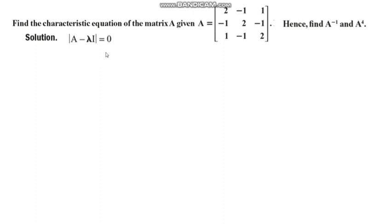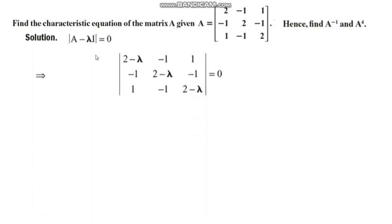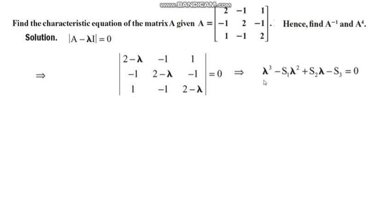The characteristic equation is the determinant of the characteristic matrix set equal to zero. It is obtained by adding negative lambda to the principal diagonal elements of the matrix. This gives a cubic equation in lambda, strictly in the form: λ³ − s₁λ² + s₂λ − s₃ = 0.